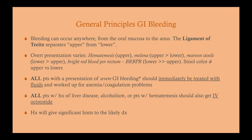Some general principles of GI bleeding: bleeding can occur anywhere from the oral mucosa to the anus. When we talk about GI bleeding, we typically refer to upper or lower GI bleeding, but the problem is you don't really know where it's coming from initially. A lot of people think bright red hematemesis means upper, dark stools means upper, and maroon or bright red blood per rectum means lower — and for the most part that's true, but it's just a general rule of thumb.